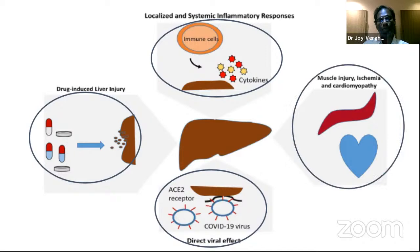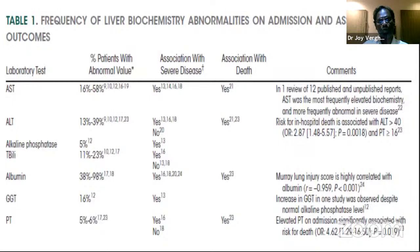Remdesivir and tocilizumab per se can act as hepatotoxic agents. Apart from that, cardiogenic shock due to virus-induced myocarditis can cause overall low blood pressure, leading to ischemic hepatitis. So in a COVID-19 positive patient, the liver function test is one of the most important tests. If it shows abnormality, it might be direct virus-induced, SIRS-induced, treatment-induced, or due to cardiogenic shock.